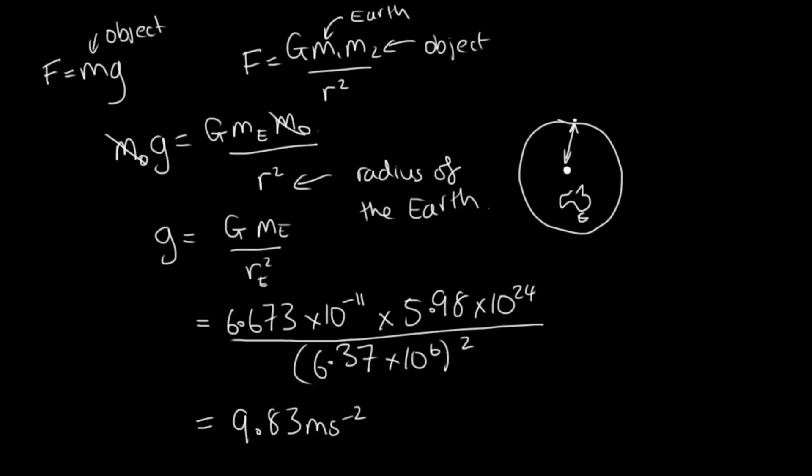So if you ever need to calculate the acceleration of any object on any planet or on the moon, you can simply use this formula here. And to get the weight force of the object, we can simply use this formula here with the little g for the specific planet that we're considering.